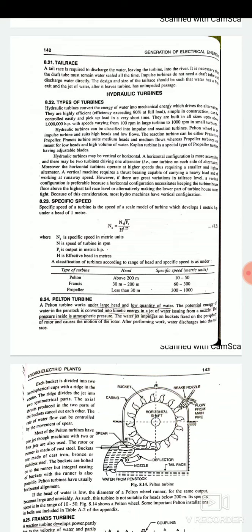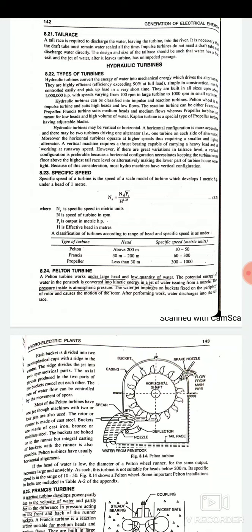The hydraulic turbines may be vertical or horizontal. A horizontal configuration is more accessible and there may be two turbines driving one alternator, that is one turbine on each side of alternator. Moreover the horizontal turbines operate at higher speeds thus requiring a smaller and lighter alternator.